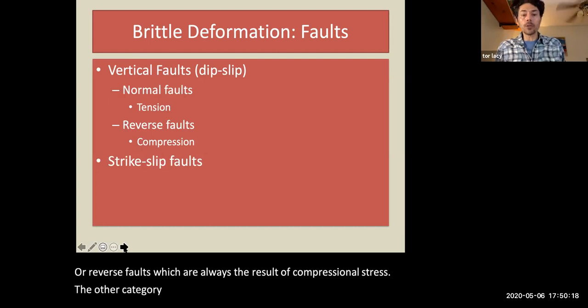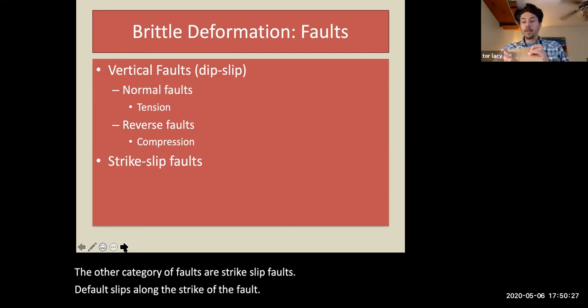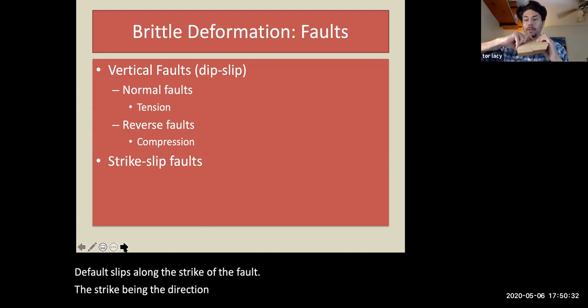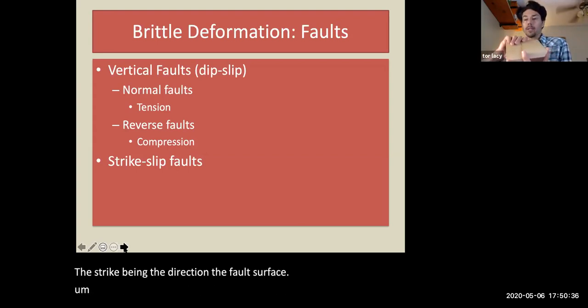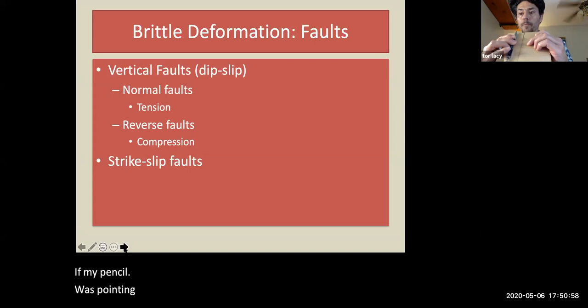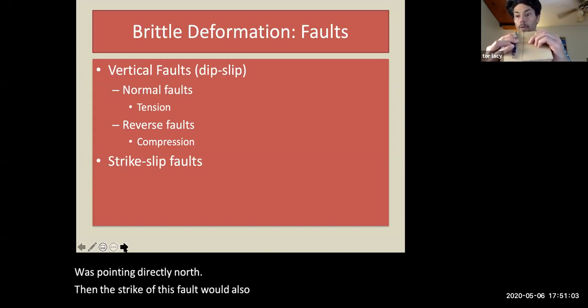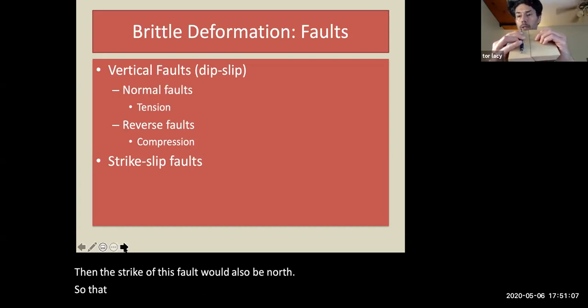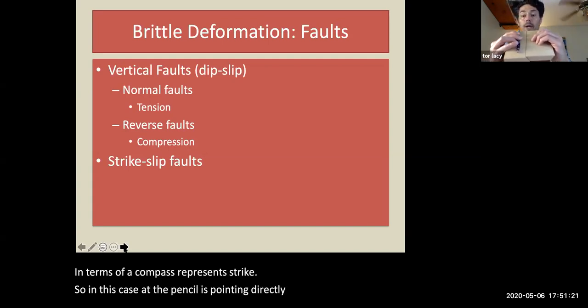The other category of faults are strike-slip faults. The fault slips along the strike of the fault. The strike being the direction the fault surface is relative to north on the Earth's surface. So for the blocks I'm holding here, if my pencil was pointing directly north, then the strike of this fault would also be north.